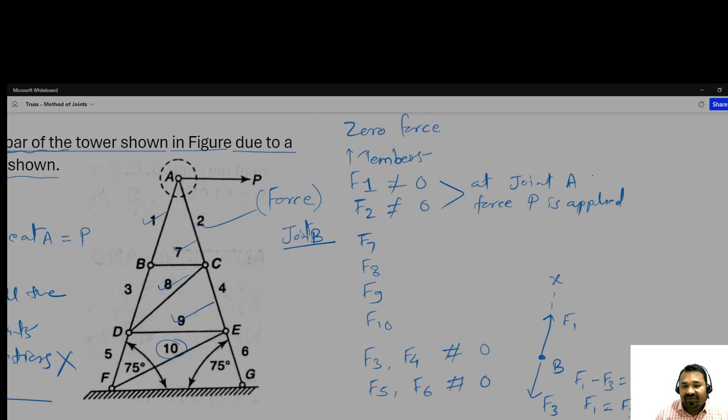What about F7, F8, F9, F10? At B, suppose it is F1, F3, and F7. You can see if this is the x-axis, only F7 is the vertical force.